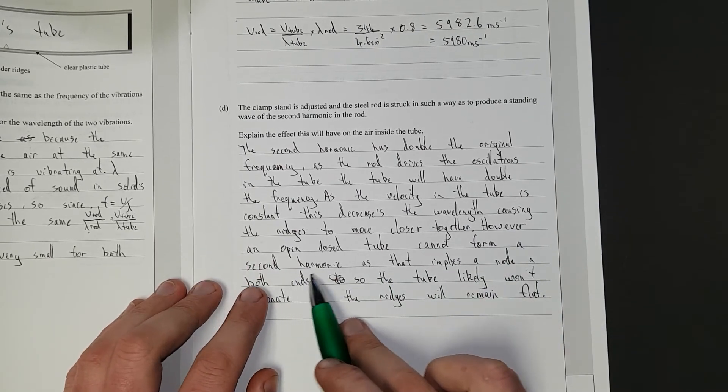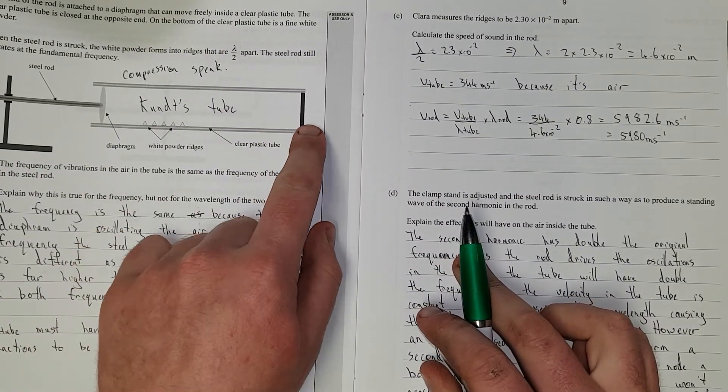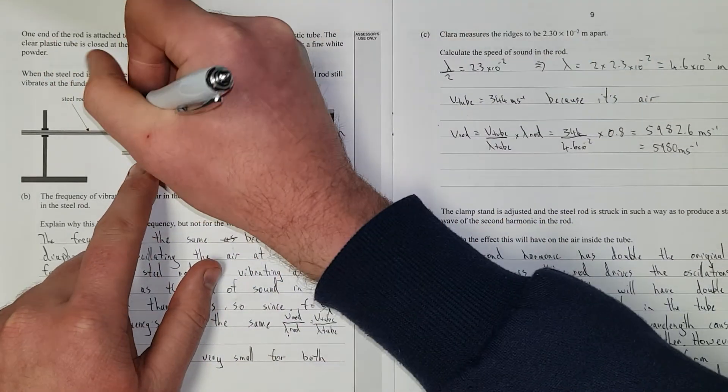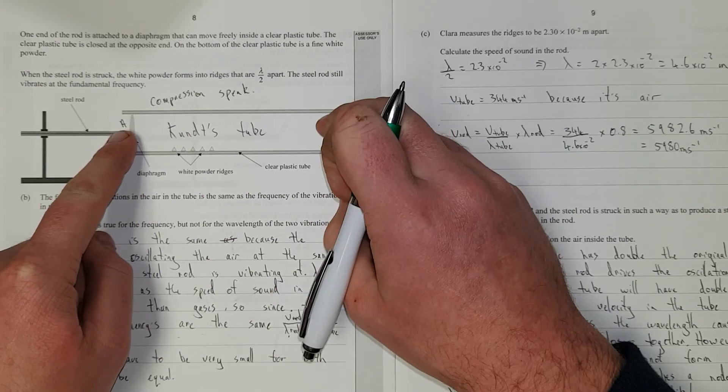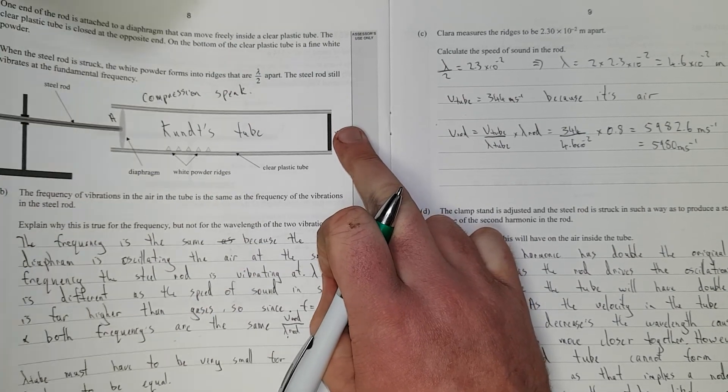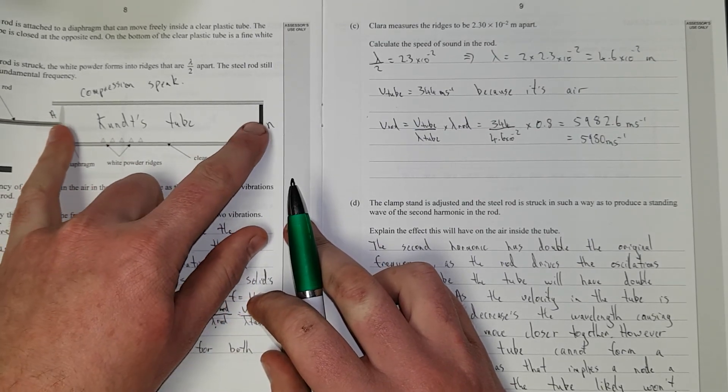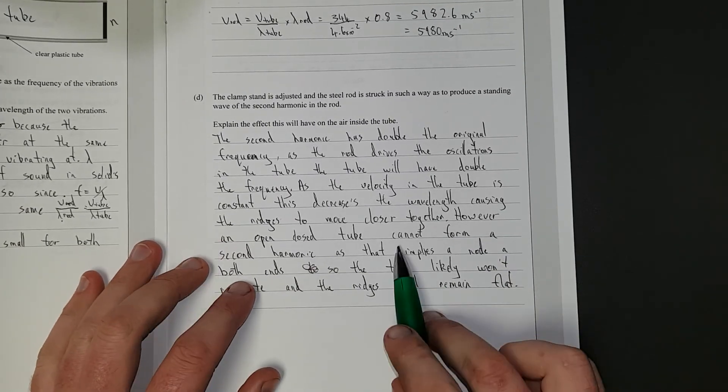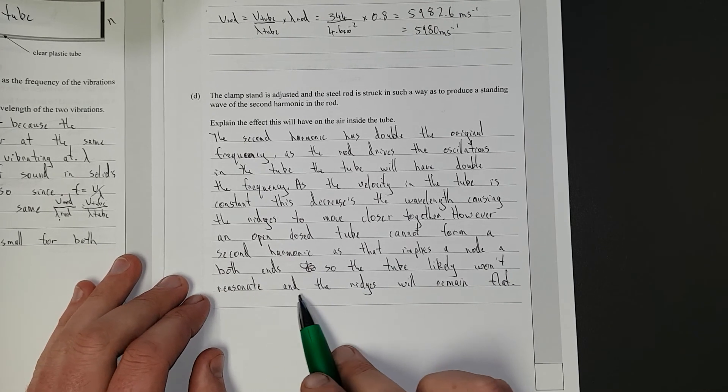However, an open closed tube cannot form a second harmonic as that implies a node at both ends. Here's a node, there'll be a node here, and there'll be an anti-node here. So that's quarter of a wavelength. Half a wavelength would imply there still has to be a node here. It'd be node, anti-node, node. That's impossible. You can't form a second harmonic. It's kind of a weird setup. But anyway.